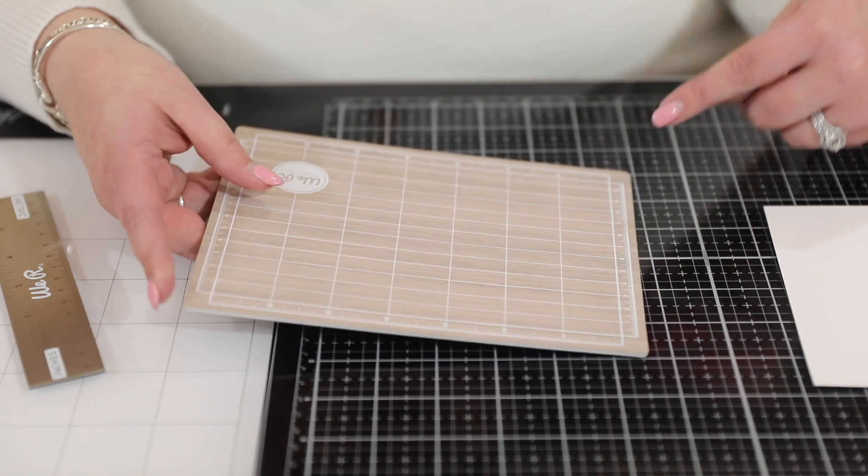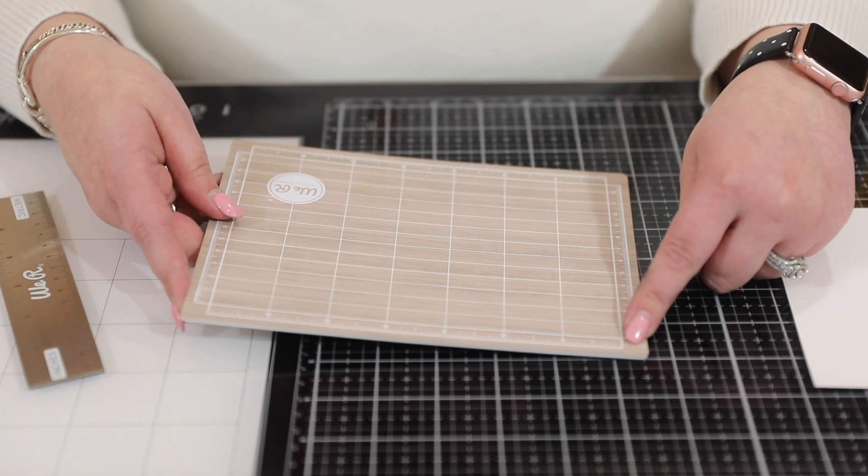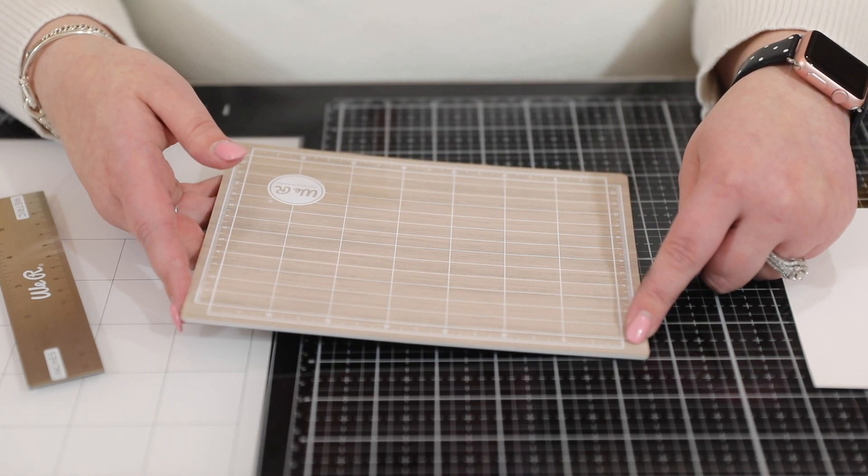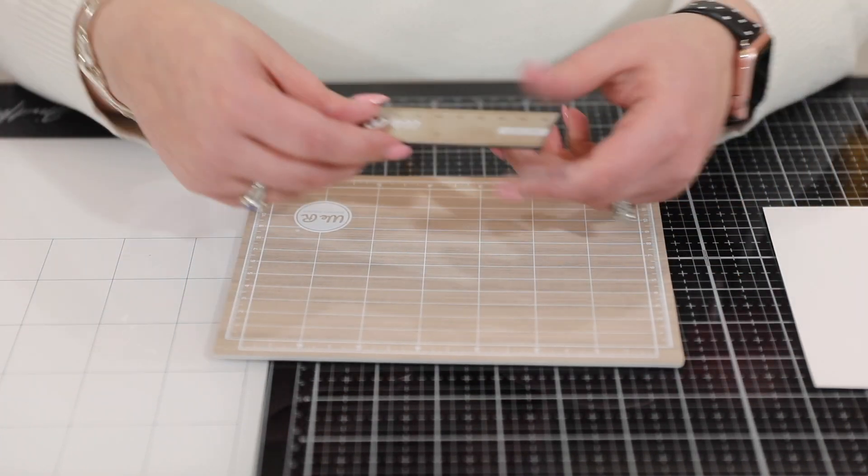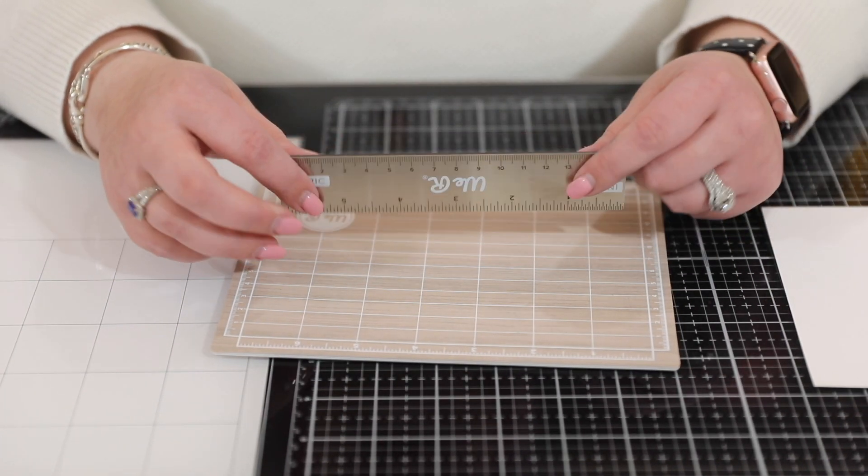It also has metric on it as well, so Greg was quite a fan of having the centimeters on it. It comes with this little magnetic ruler that sticks on.